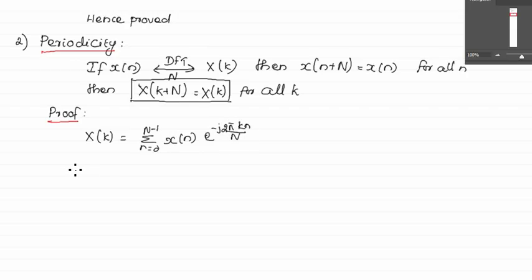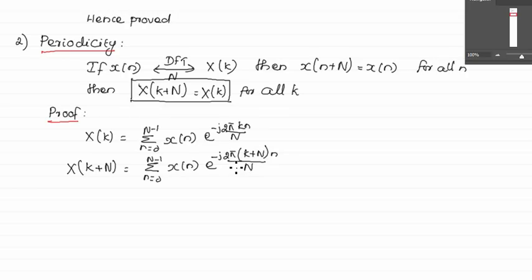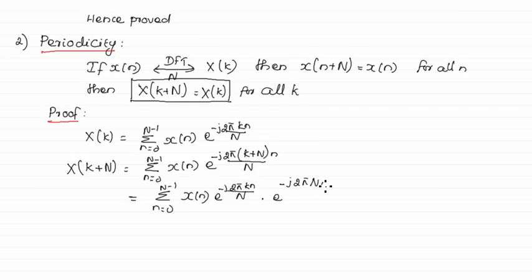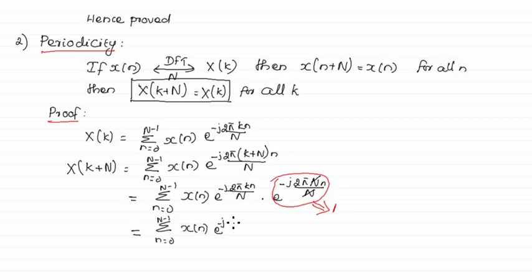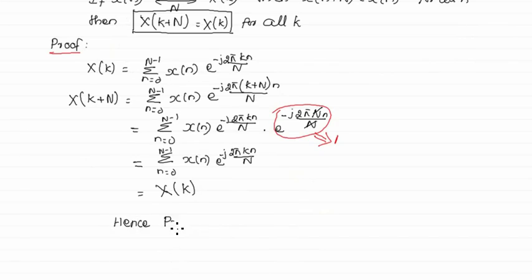Now we find X(k+N) by replacing k with k+N. So the DFT becomes summation from n=0 to N-1 of x(n)·e^(−j2π(k+N)n/N). We split the exponent into e^(−j2πkn/N) · e^(−j2πNn/N). Cancelling N/N, and knowing that integer multiples of complex exponentials equal 1, this reduces to summation from n=0 to N-1 of x(n)·e^(−j2πkn/N) = X(k). Therefore X(k+N) = X(k), hence proved.